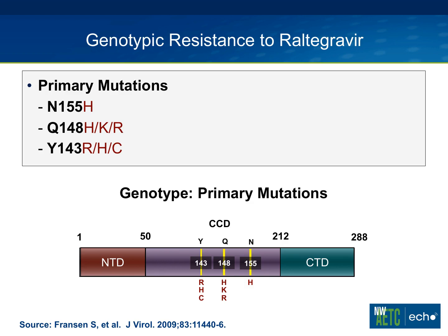The integrase genome has three major segments: the N-terminal domain, the C-terminal domain, and the catalytic core domain in the middle. The middle part of the enzyme is where you see all the mutations develop, because that's the business end of the integrase enzyme — where the binding and action of the enzyme occurs. The primary mutations seen with raltegravir resistance are the N155H mutation, the Q148 mutation, and the Y143 mutation. Those are the primary mutations.